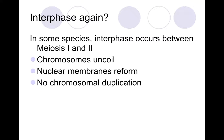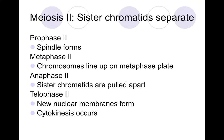Does interphase occur again? In some species interphase does occur again, but no matter what, there is no chromosomal duplication in this process. The chromosomes uncoil and nuclear membranes can reform, but there is no chromosomal duplication if interphase occurs in that species. So in part two of meiosis we again have prophase two, metaphase two, anaphase two, and telophase two.